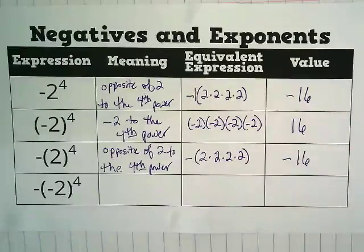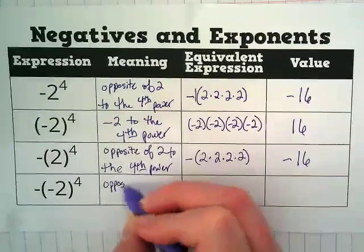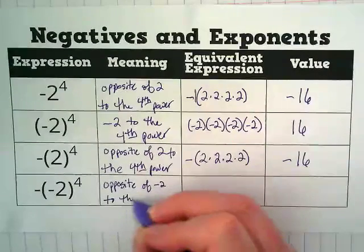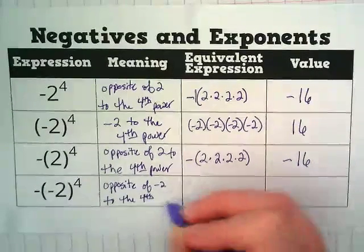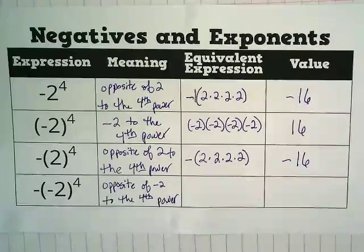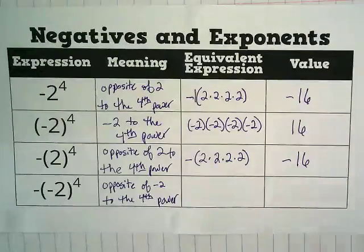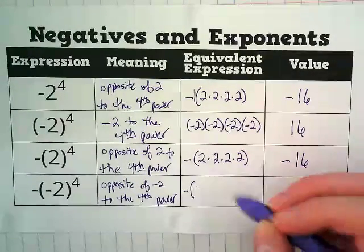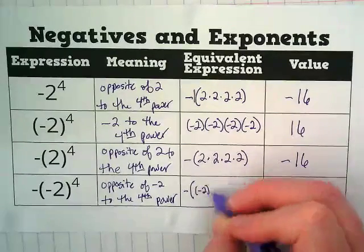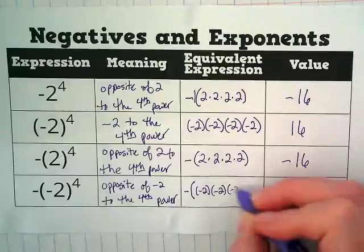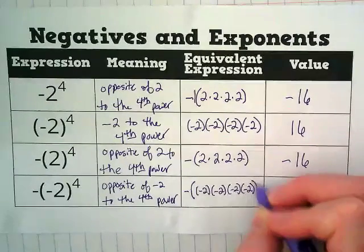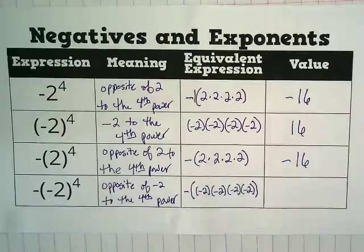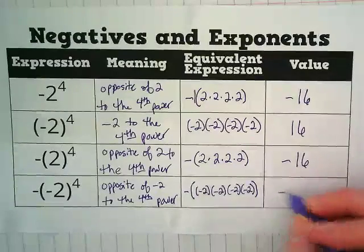That last one means opposite of negative 2 to the 4th power. Because there's a negative captured inside the parentheses, this one's equivalent expression is a little bit more challenging. We're going to have a negative outside of a bigger parentheses, and then inside that, we have four negative 2s inside their own parentheses. And we get negative 16.